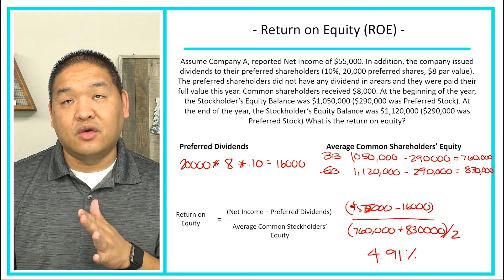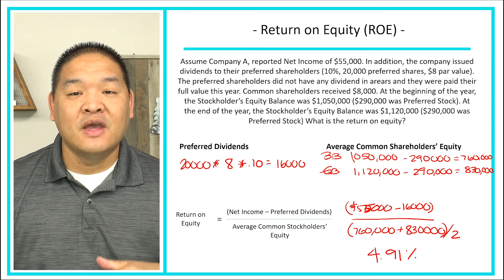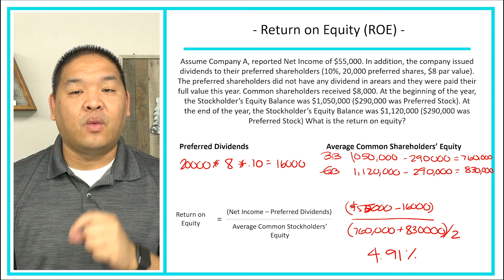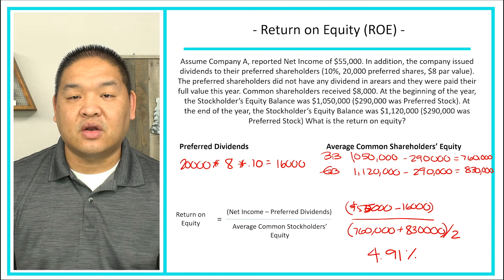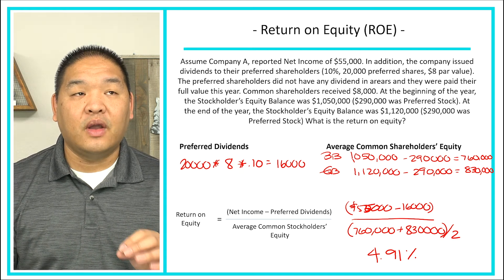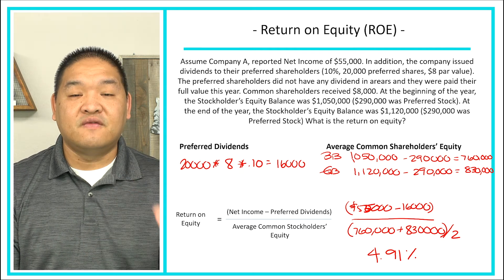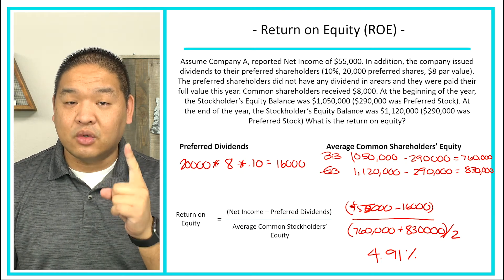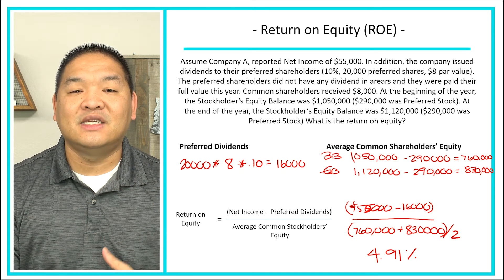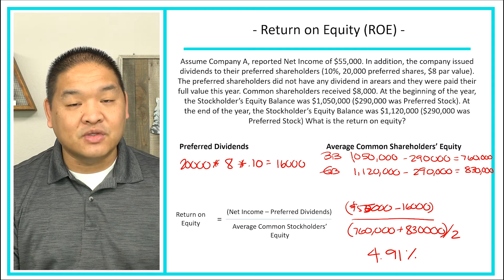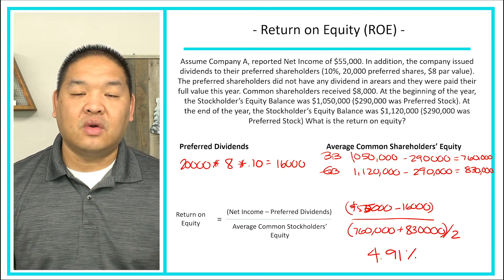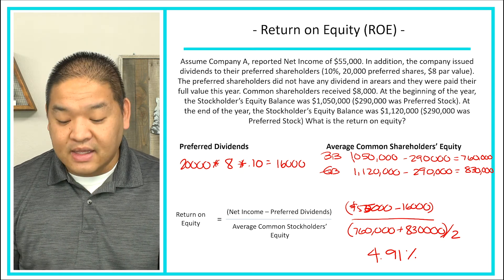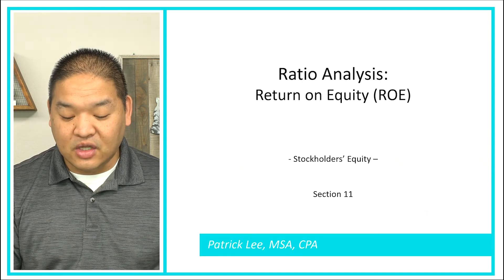So 4.91% means that for every dollar invested by a common shareholder, the company is able to generate 4.91% in profit. That does not mean that for every $100 invested an investor receives $4.91 back directly — companies don't always pay dividends, and they need to retain capital to invest and innovate. A shareholder might personally see only one or two percent of that 4.91%, depending on dividend policy. That is our return on equity.